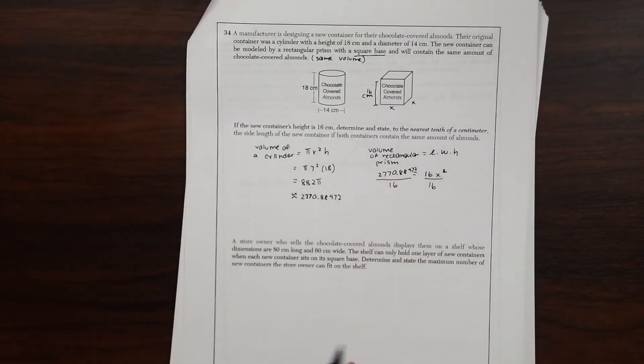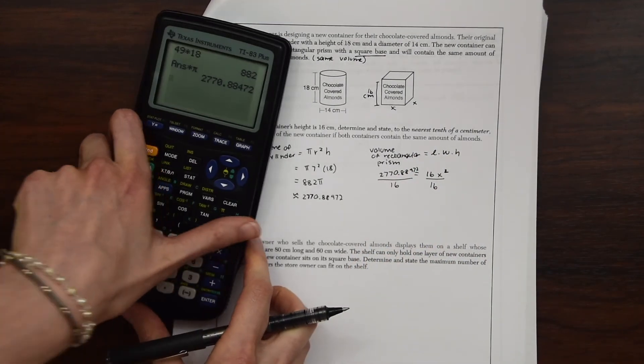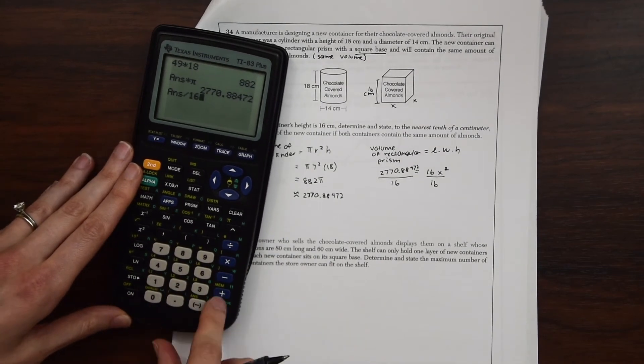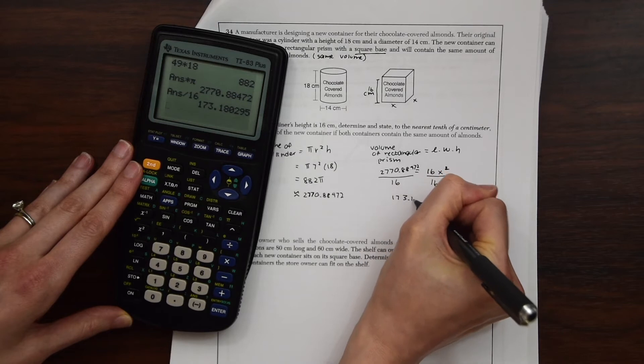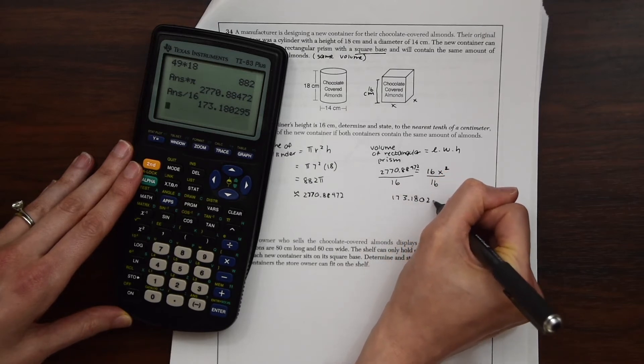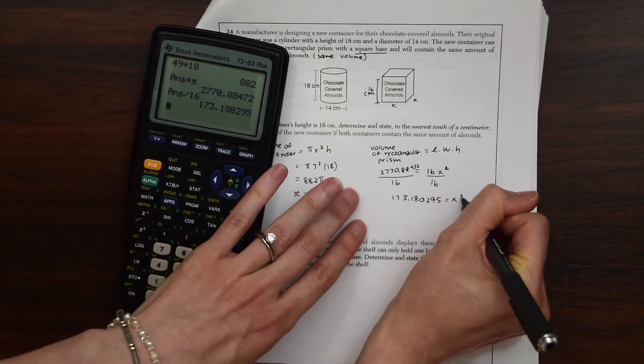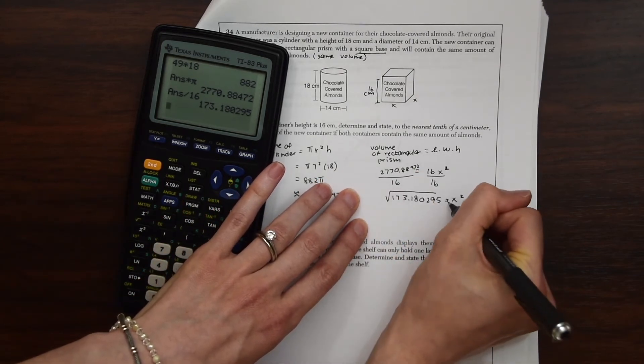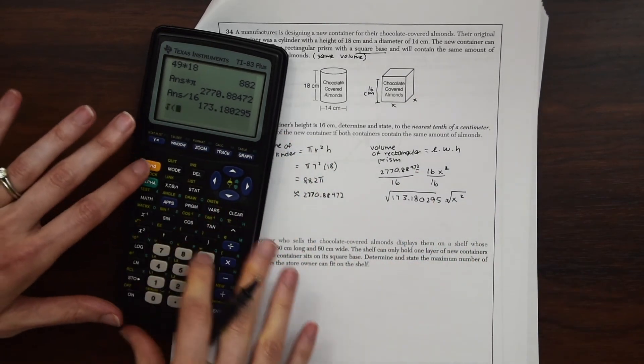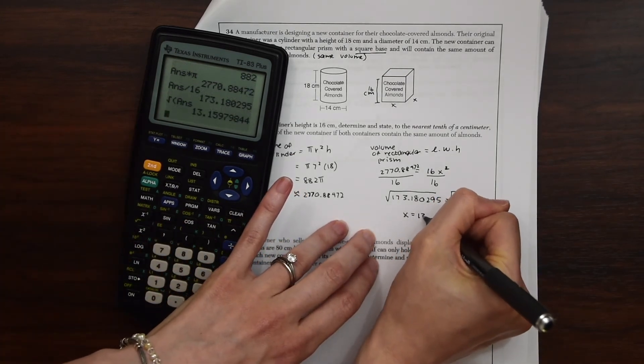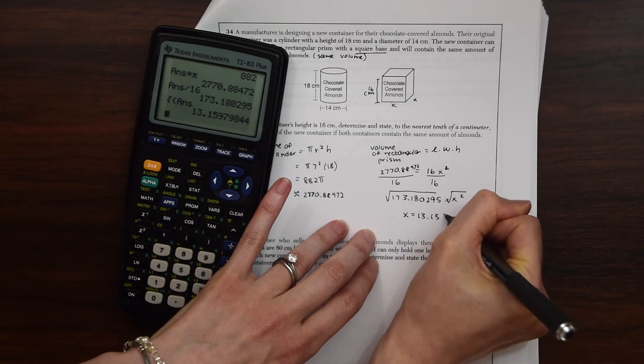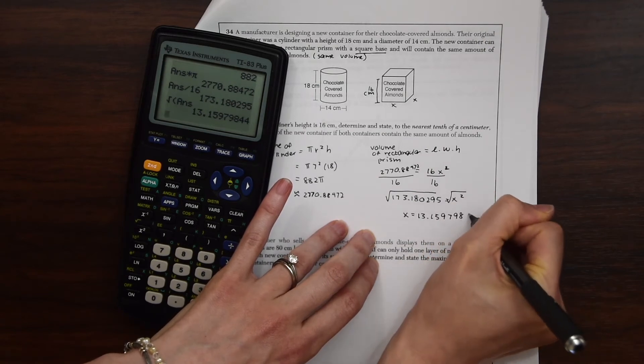So divide this by 16. So you can divide by 16 here. And then you'll get 173.180295 is equal to x squared. Take the square root of both sides. And we're left with x is equal to 13.15979844.